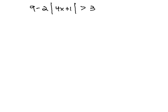In this video, we will solve the absolute value inequality 9 minus 2 times the absolute value of 4x plus 1 is greater than 3.